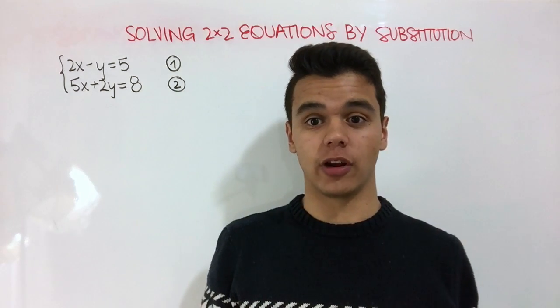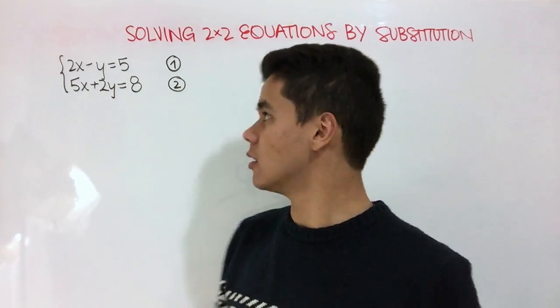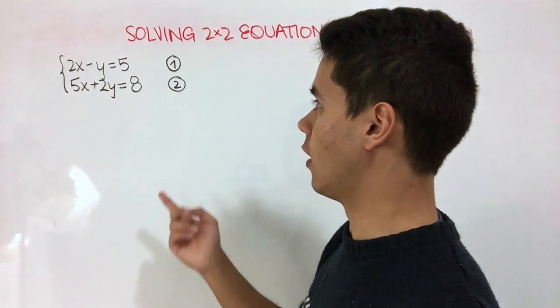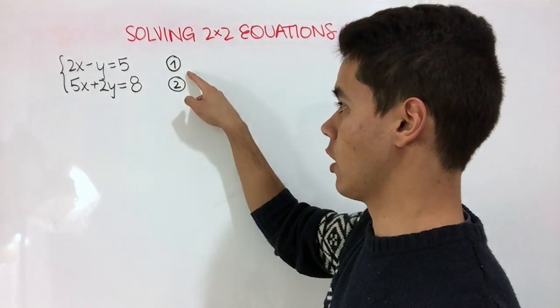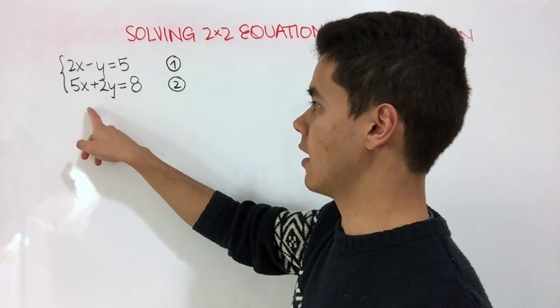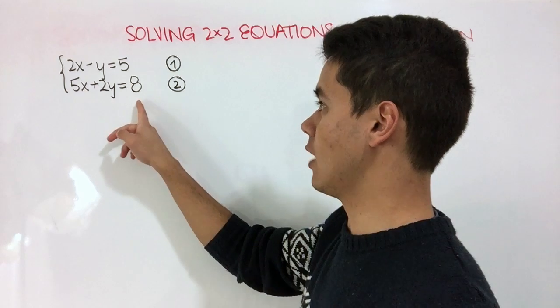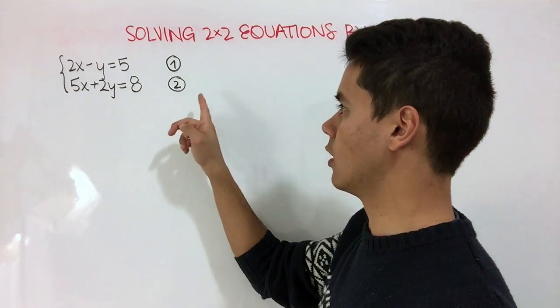For our example, we're going to use the following system of equations. We have 2x minus y is equal to 5, and we're going to call that our equation 1. And we have 5x plus 2y is equal to 8, and we're going to call it our equation 2.